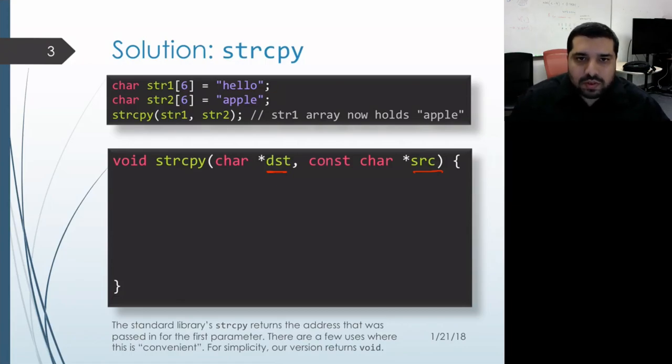Looking at the body of this function, we're going to be iterating over the source string until we hit the null terminator, and in each iteration we'll be copying one character at a time. Once we hit the null terminator that tells us when our source string ends, and that's when we need to stop copying characters.